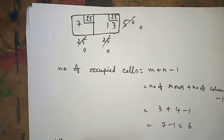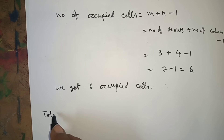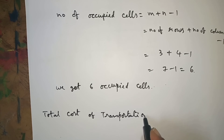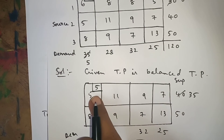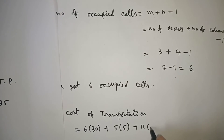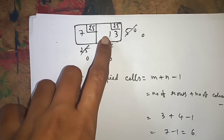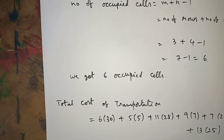Now, the total cost of transportation: in the first table we have the occupied cell value 6 multiplied by 30; plus in the second table, 5 multiplied by 5; in the third table, 11 multiplied by 28; in the fourth table, 9 multiplied by 7; then 7 multiplied by 25; plus 13 multiplied by 25. Multiply all values and simplify to get the answer.